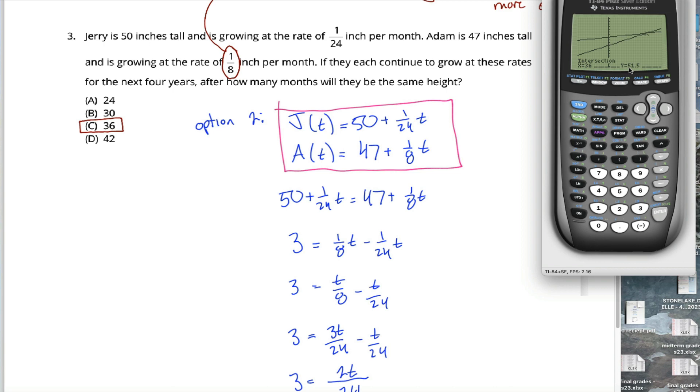By the way, the y coordinate at that point is 51 and a half, but you don't care about that. You don't care about how tall these kids are when they're the same height. You care about how long it'll take for them to become the same height. That's the x or t coordinate, which is 36.